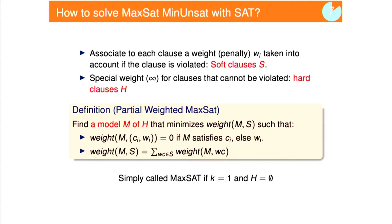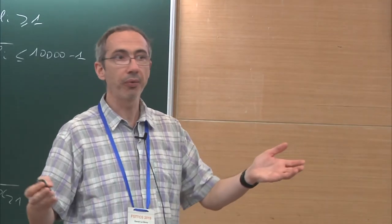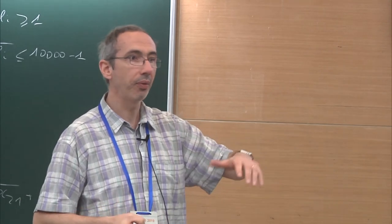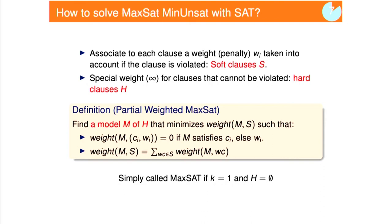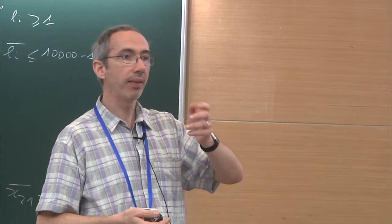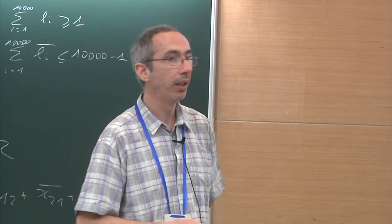The way MaxSAT works is that we have a penalty taken when you are allowed to violate clauses, but you have to pay a price. There are two sets of clauses: the hard clauses you must satisfy, and the soft clauses for which you have a price to pay if you want to violate them. In weighted partial MaxSAT, you want to satisfy all hard constraints and minimize the penalty from violating soft constraints.